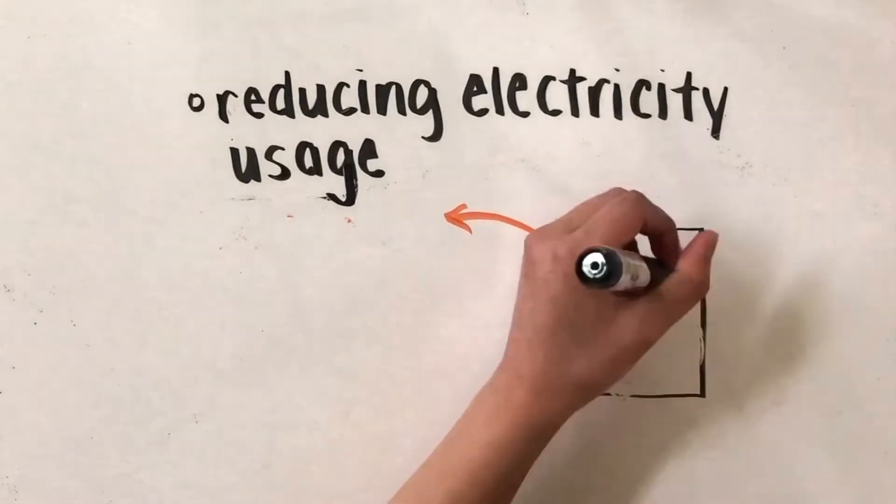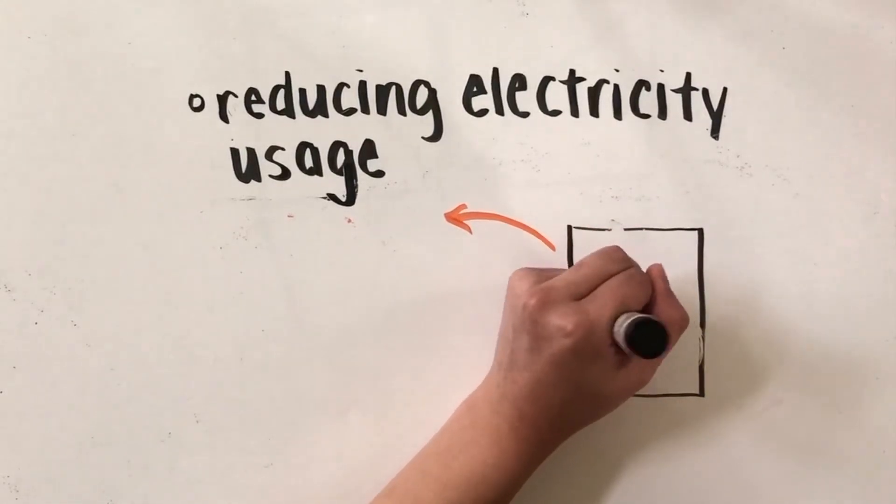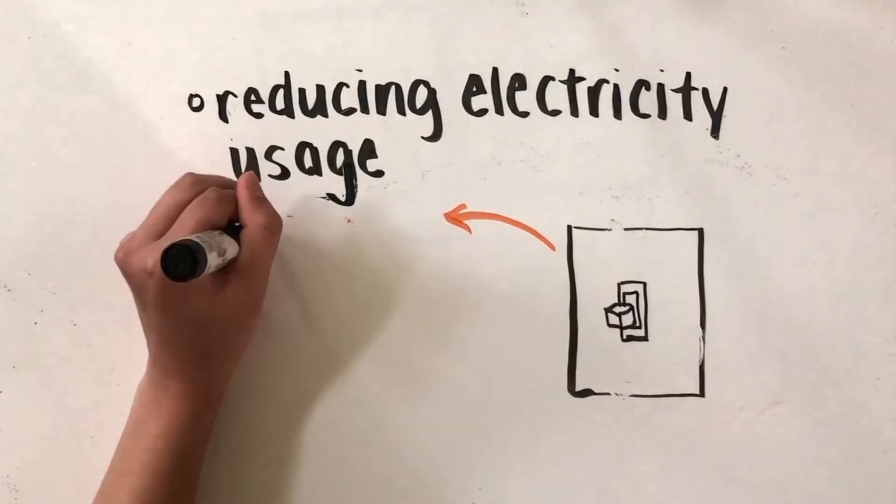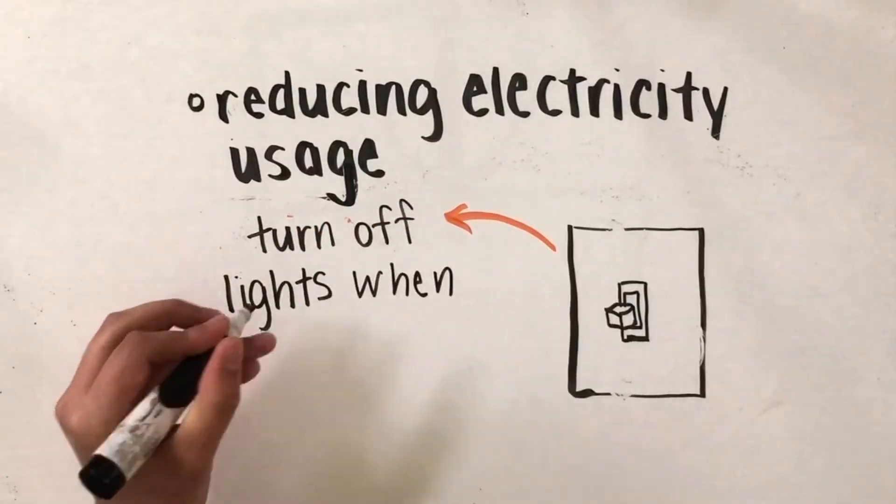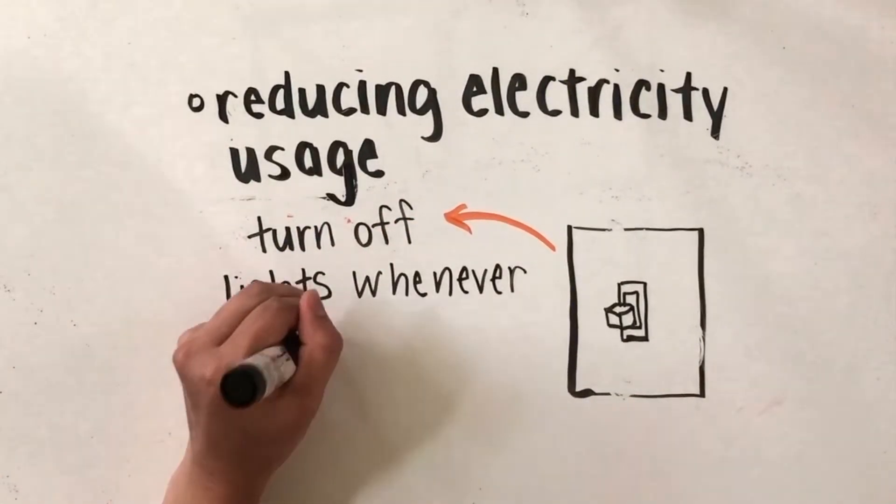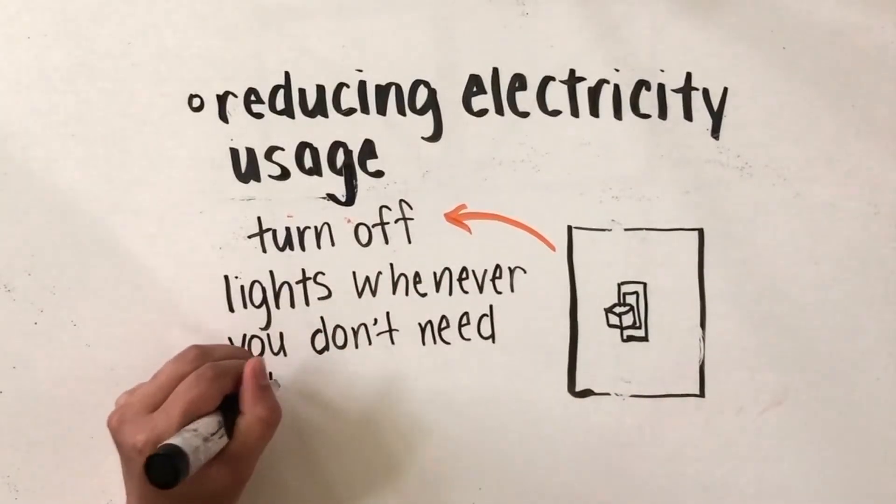This should go without saying, but make sure that whenever you leave a room or you're not using the lights in one room, just turn them off. Lighting accounts for about 5% of your home's electricity bill, so this can also save you a ton of money.